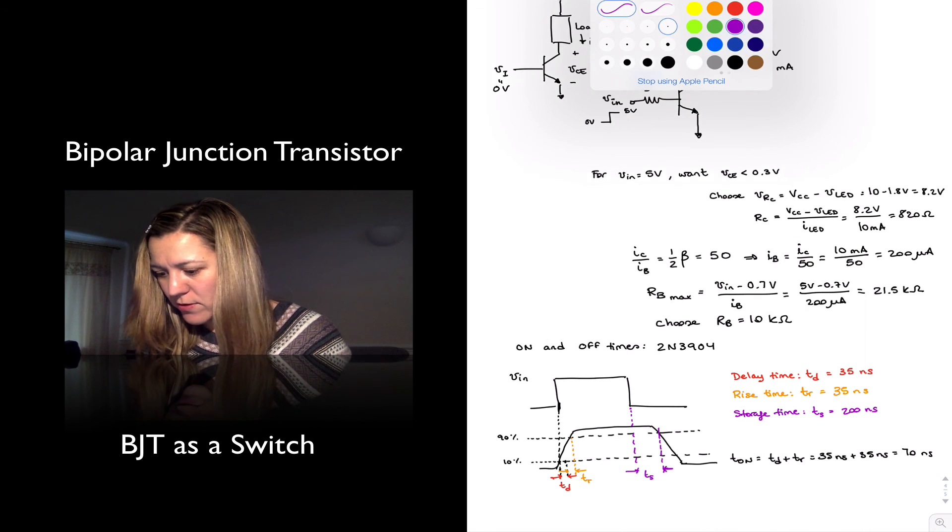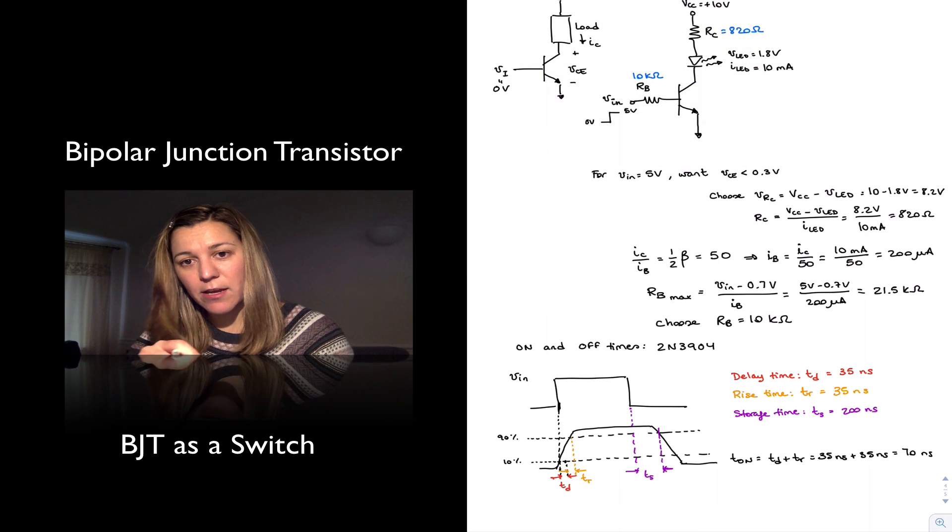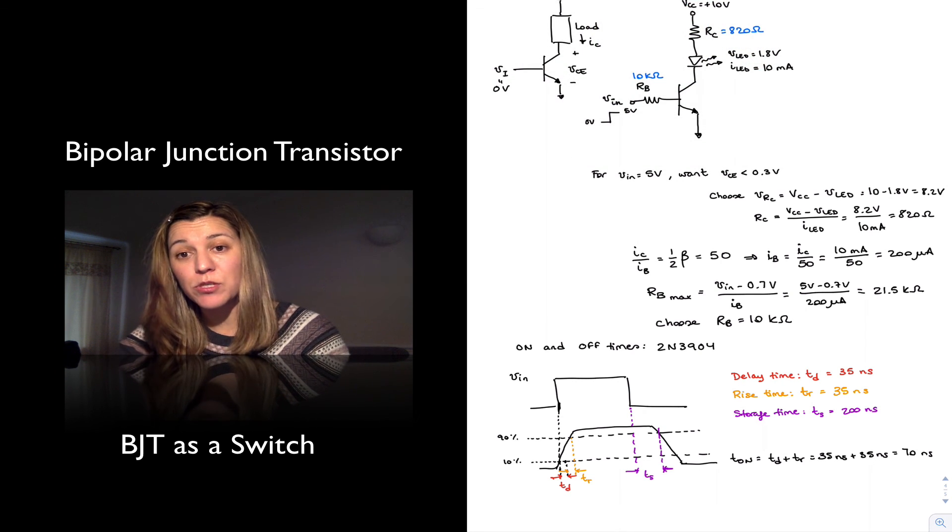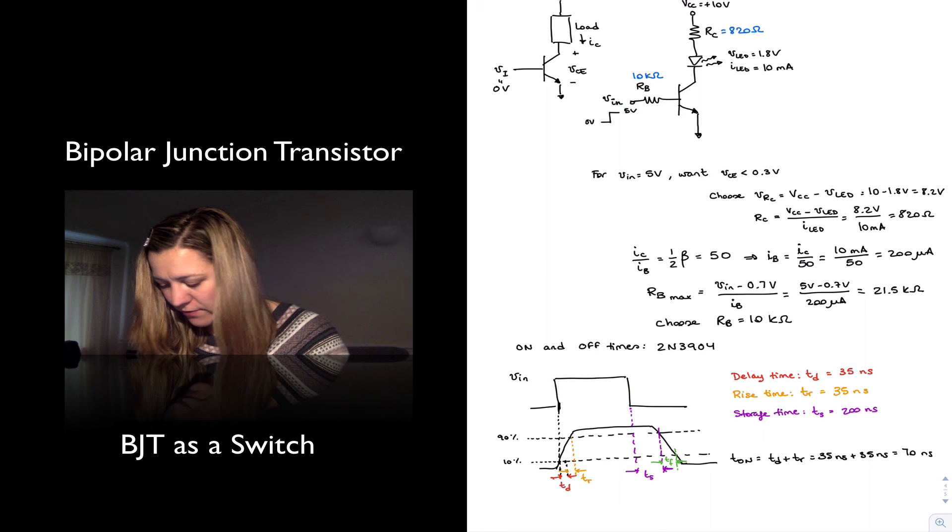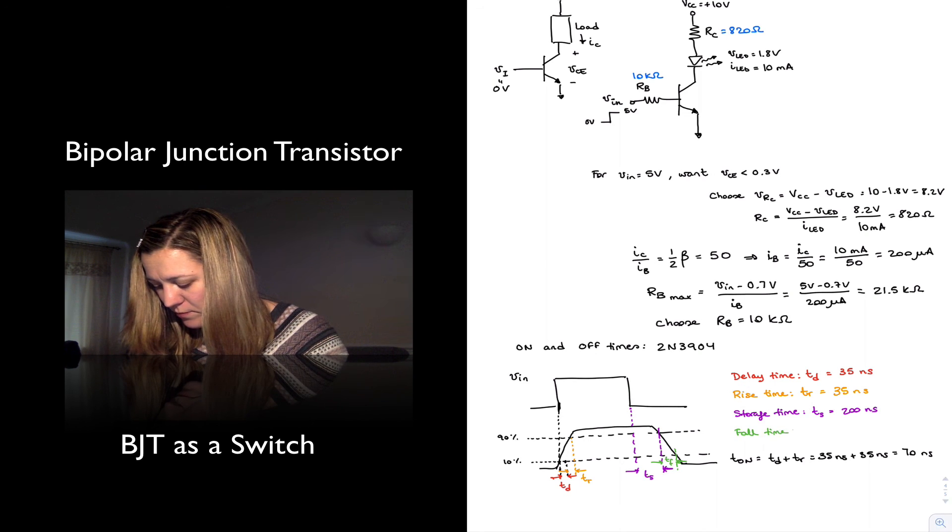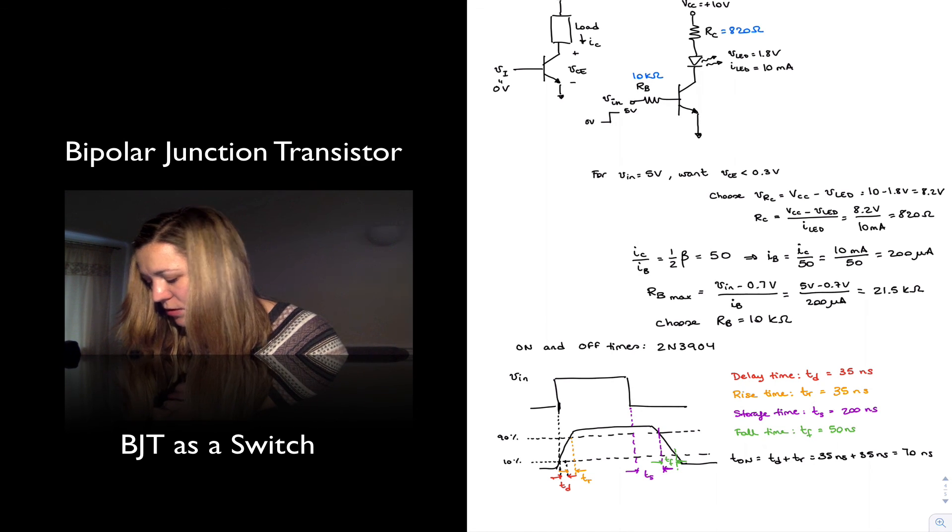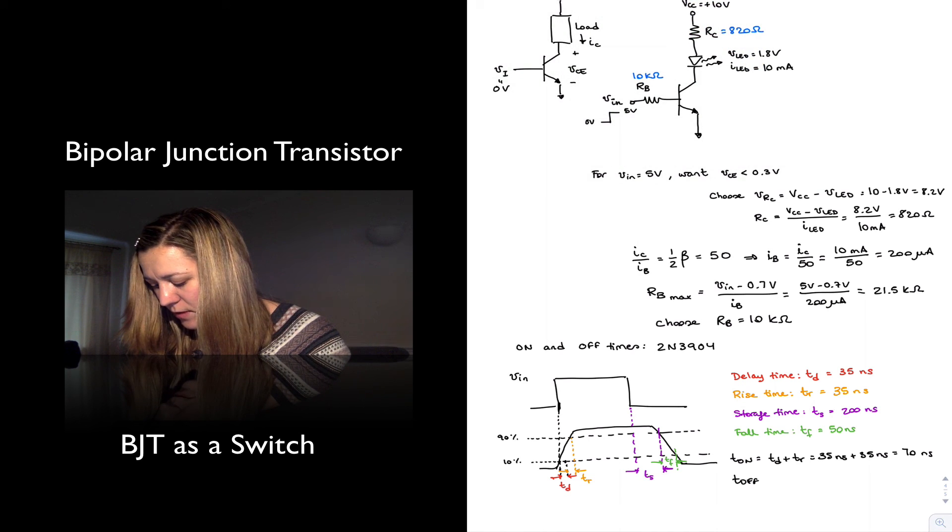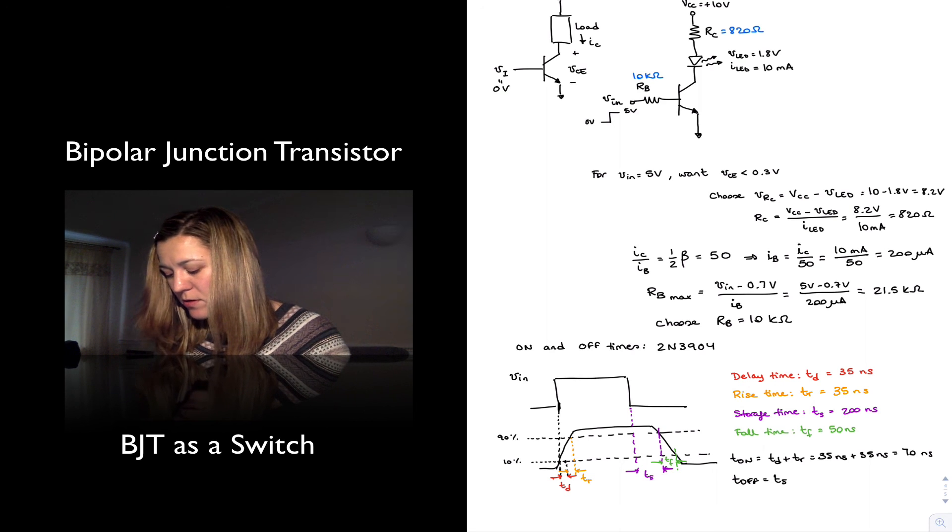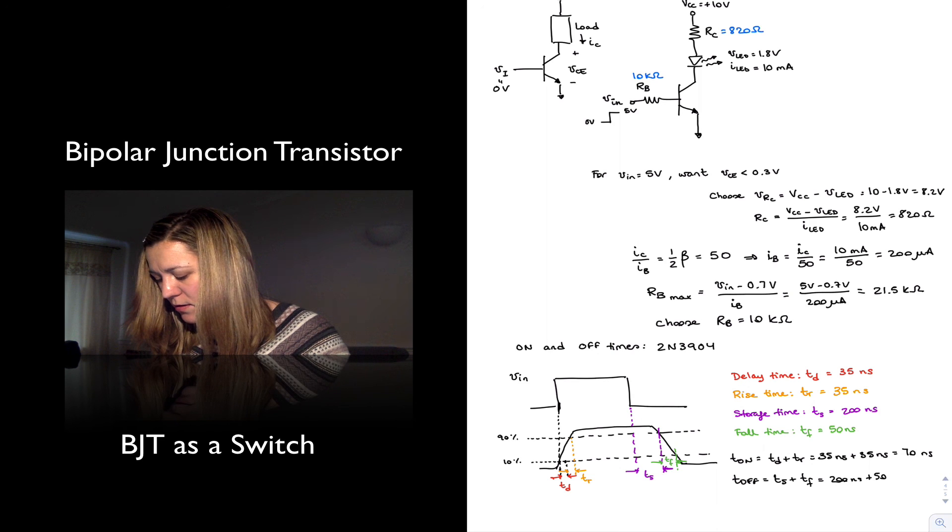And finally, we have the fall time, which is the time it takes for the output of the transistor to go from the 90% point to the 10% point. TF, fall time. And in the case of this transistor is 50 nanoseconds. And so the overall off time is equal to the addition of the two, the storage time plus the fall time, or 200 plus 50, which comes out to be 250 nanoseconds.